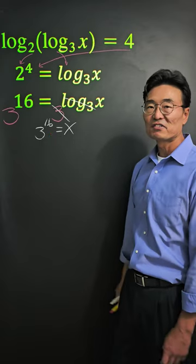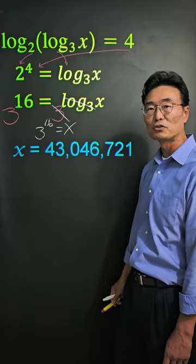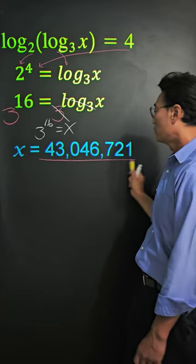If you do 3 to the 16th power on the calculator, you'll get 43,046,721, our final answer.